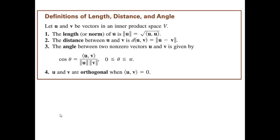Let U and V be vectors in an inner product space V. We define the length of U — the norm of U — as the square root of the inner product ⟨U, U⟩. Recall that in Section 5.1, we defined the norm as √(U₁V₁ + U₂V₂) because we used the Euclidean inner product. Here we are using the generalized inner product.